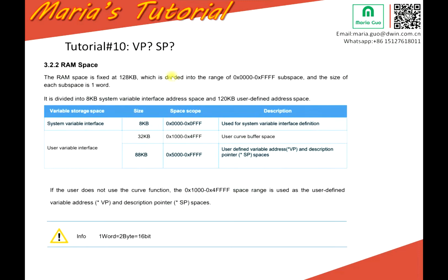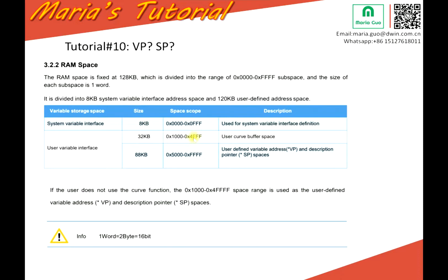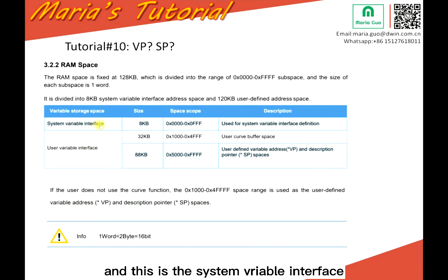The VP address and also the SP address are actually RAM space in the given LCD display. Here is the RAM space exploration. You have tried other commands for the VP address before. This scope is the user variable interface, and this is the system variable interface.